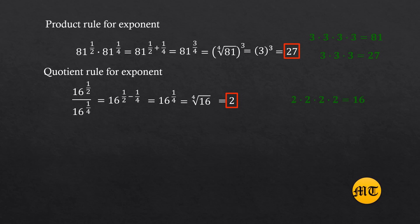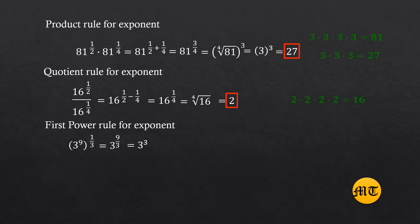First power rule for exponents: three raised to nine, also raised to one-third. It equals three raised to nine multiplied by one-third, so the product is nine over three. We have three raised to nine-thirds. Simplifying the exponent: nine divided by three equals three. We have three raised to three — three times three times three equals twenty-seven. Therefore, twenty-seven is the answer.